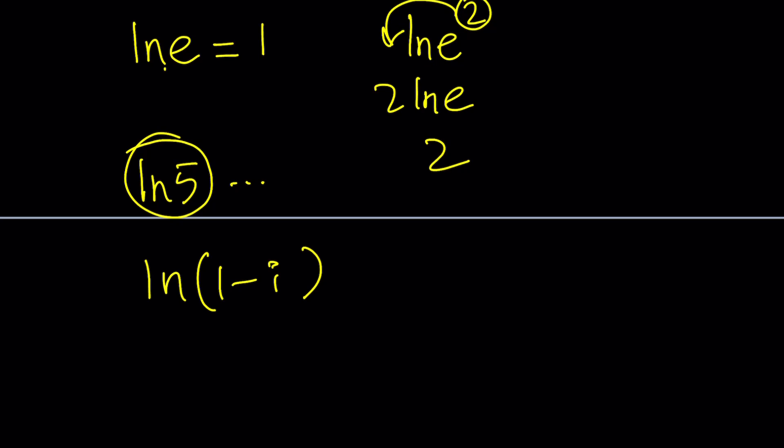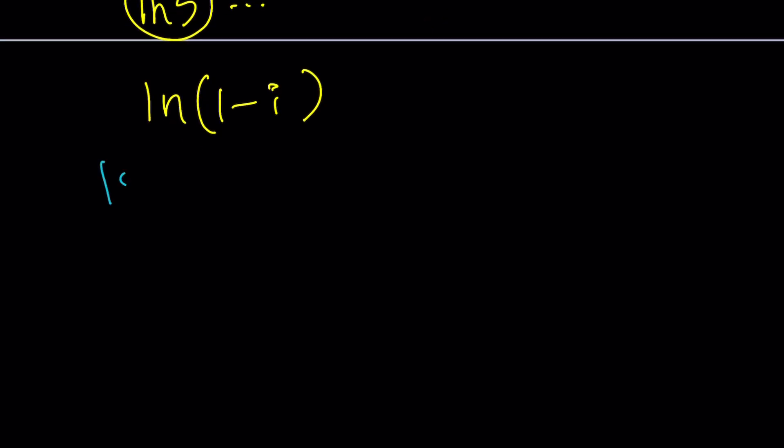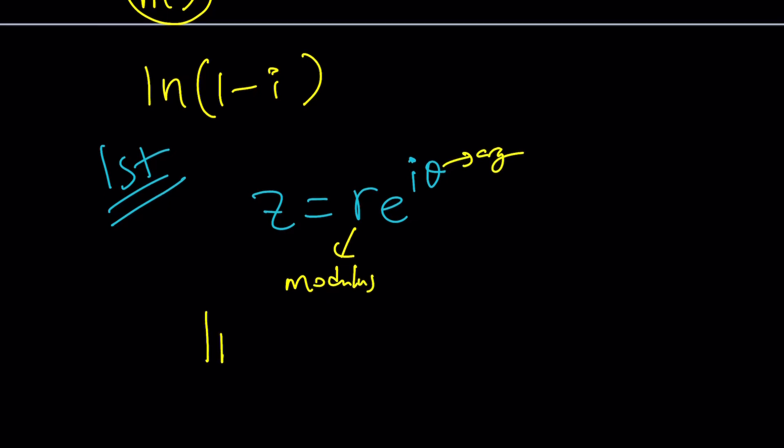Let's go ahead and call this the first method. So the first method is going to be the following. I'm going to give you the formula for the log of a complex number or the complex logarithm. And then we're going to use it to solve this problem. So how do you log a complex number? If the complex number can be written as r e^(iθ), where r is the modulus or absolute value, and θ is the argument or the angle, we can find ln(z) this way.